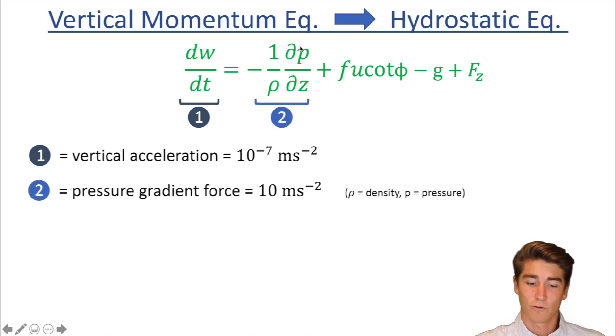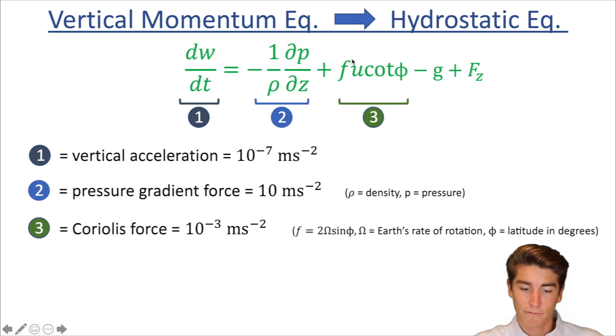This next term, you recognize that p, that's pressure. That right there is rho density and that's going to be the pressure gradient force. Next we have, if you recognize that symbol f, that is the symbol for Coriolis and that is the Coriolis force in the vertical direction. And this f you'll remember is two omega sine phi. This omega being earth's rate of rotation, it's just constant, and phi being latitude.